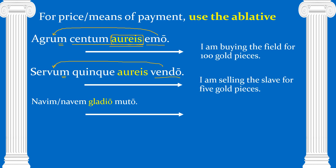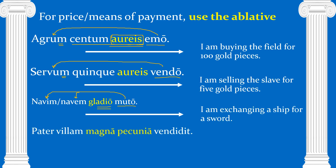Muto means 'I change' or 'I exchange.' Navem gladio muto — what am I exchanging? I'm exchanging a navem — there are two possible versions of the word for ship. I'm exchanging a ship with a gladio, which you probably know is a sword. So I'm exchanging a ship for a sword. It could also be 'I'm exchanging a sword for a ship' — in Latin it's not very clear.